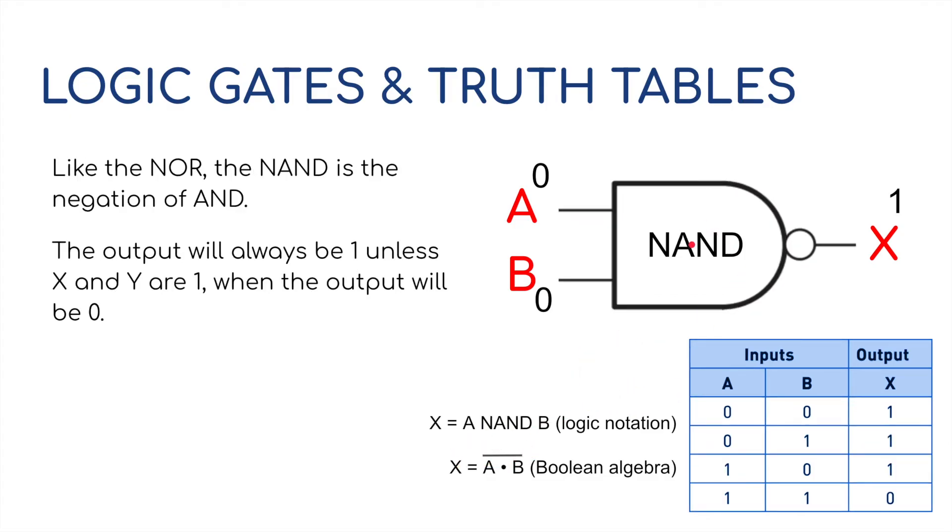And the same with the NAND gate. It's the negation of the AND. It's got one of these round things on the front of it again. The output will always be 1, unless X and Y are 1, when the output will be 0. So, 0 and 0 leads to a 1. 0 and 1 leads to a 1. 1 and 0 leads to a 1. But both being ON, the opposite, the negation of AND, would lead to 0. And as before with the NOR gate, it's A and B, but with the line over the top to specify that it is NOT A and B.